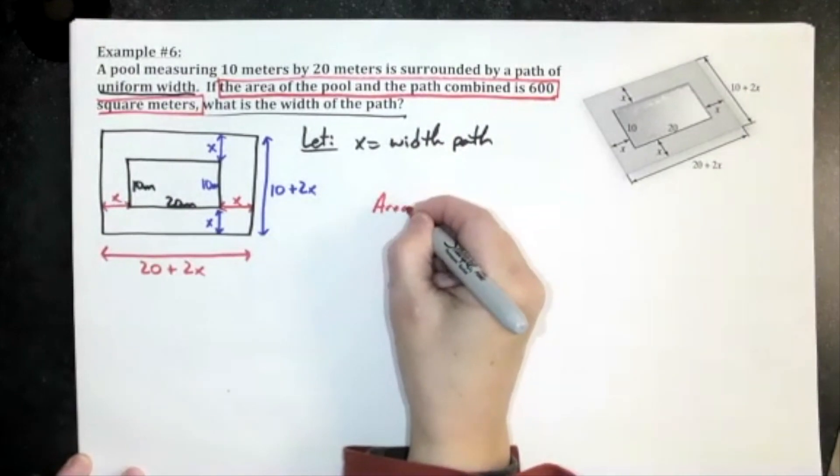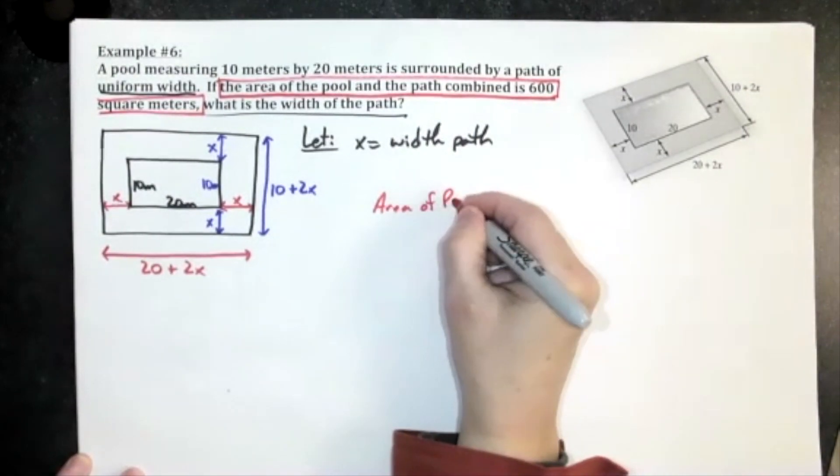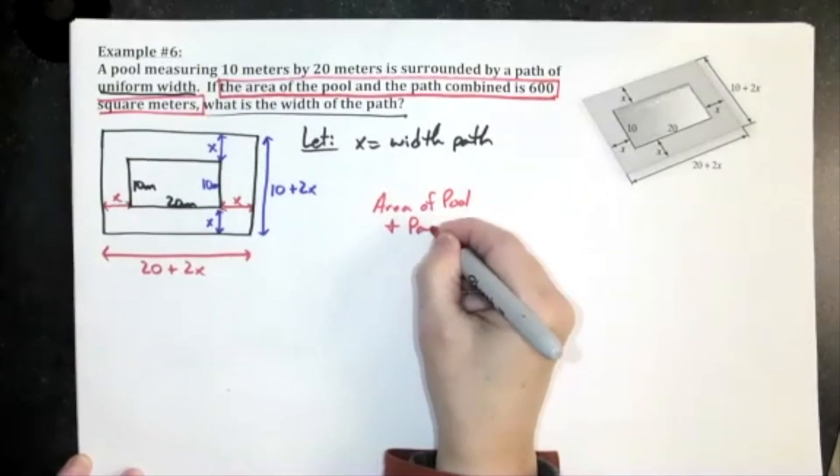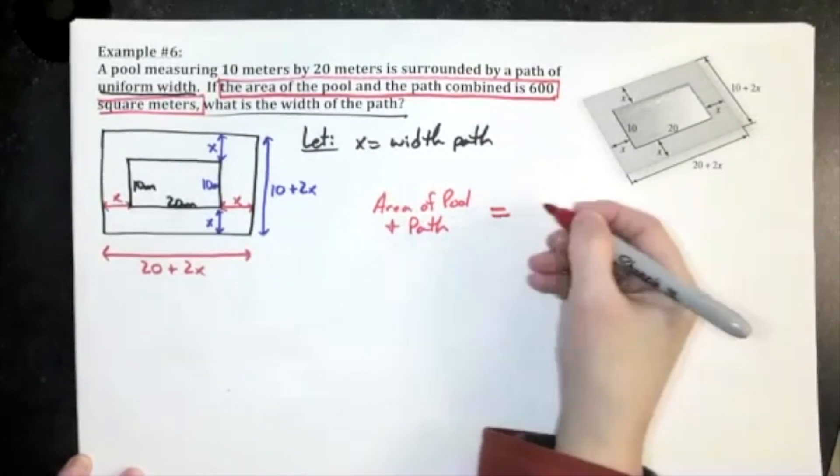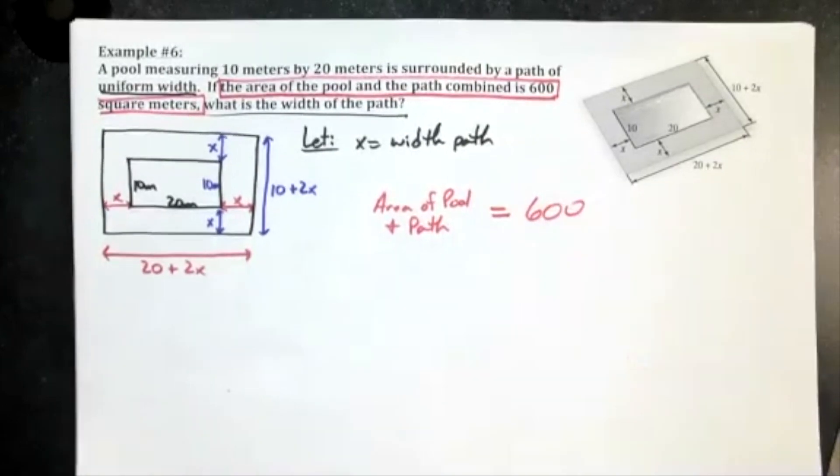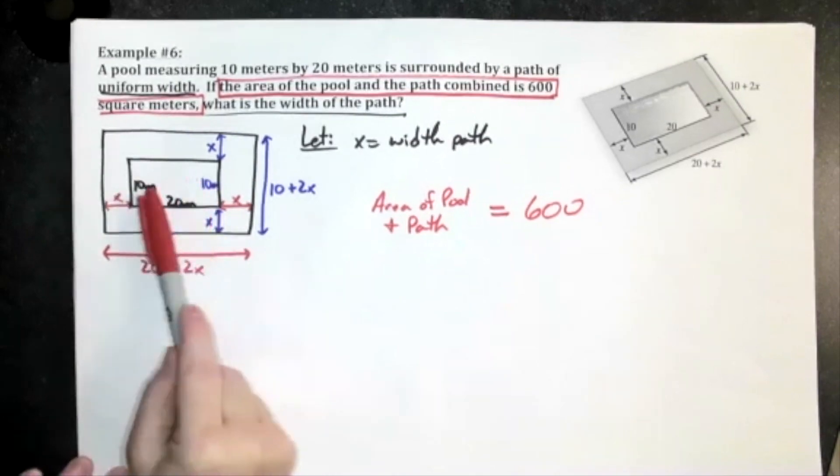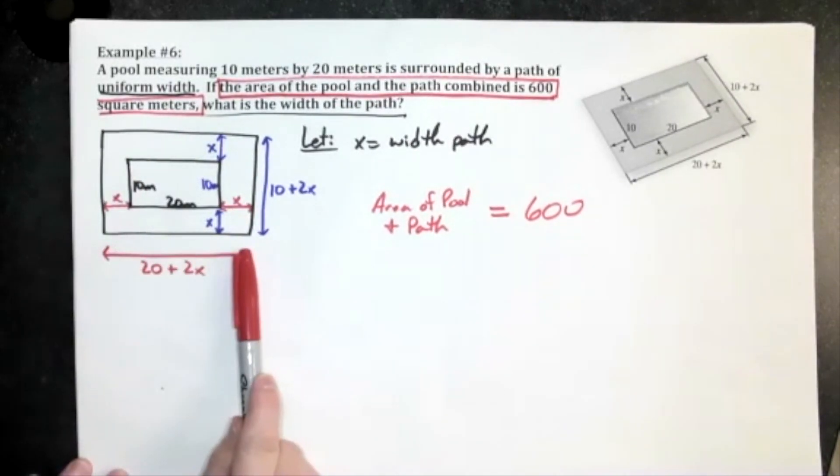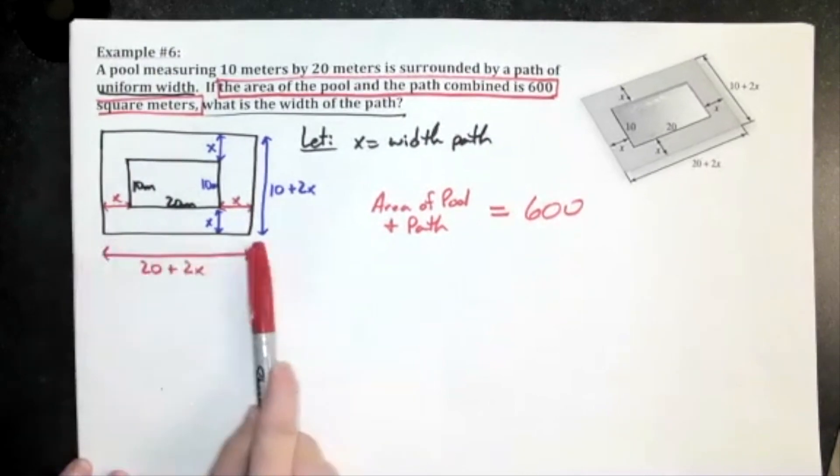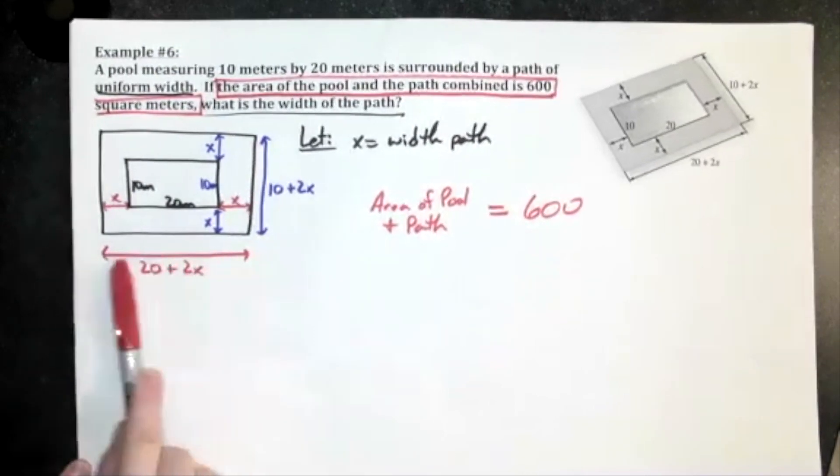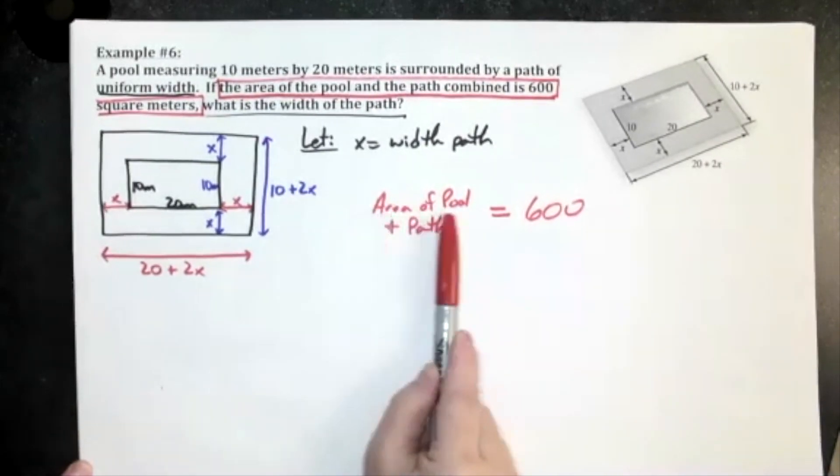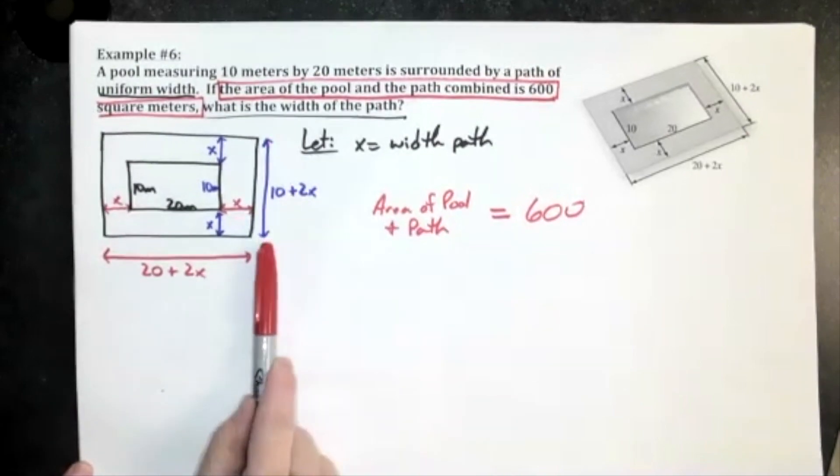Area of the pool and the path. Well here's the pool and the path, which basically means what I need, it's a rectangle, I need outside dimensions. So that's why I went ahead and found this length here, I went ahead and found this width here, because if I want the area of the pool and path, length times width, I have to know those distances.